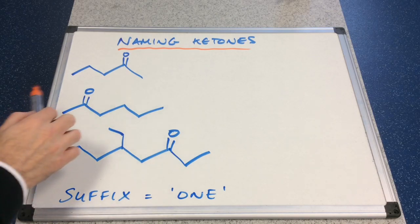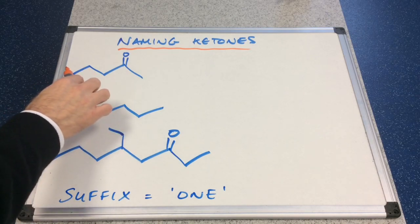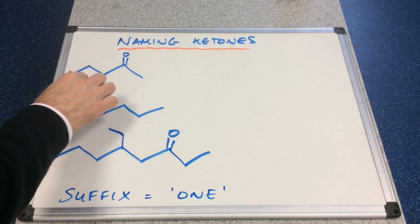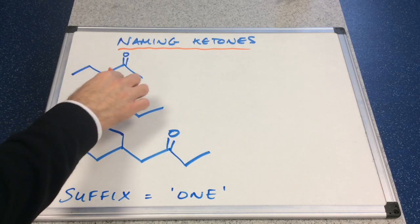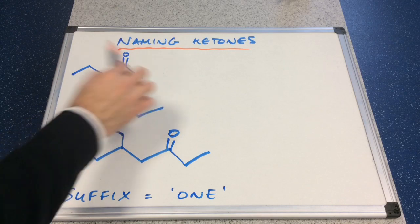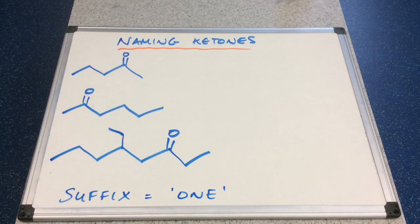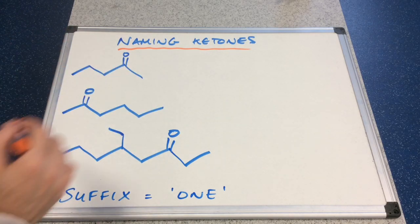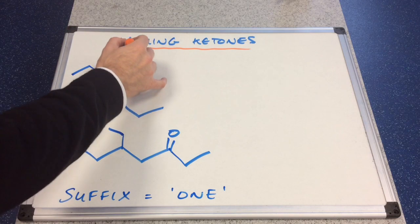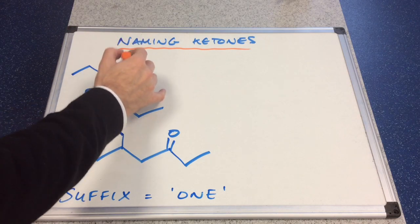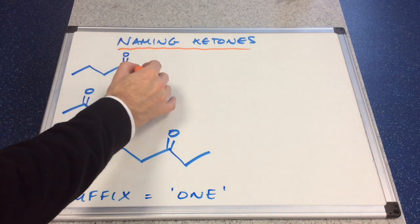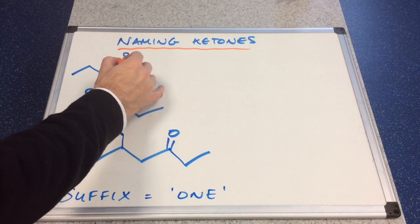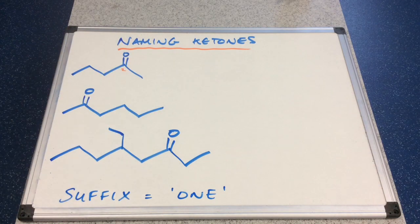We'll look at the first one. The continuous carbon chain is five long, so this is going to be based on 'pent'. Where's the C double bond O? It's on carbon number two. So this will be called pentan-2-one.